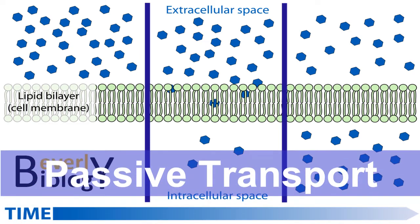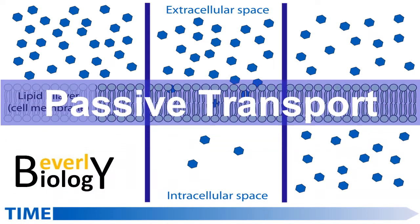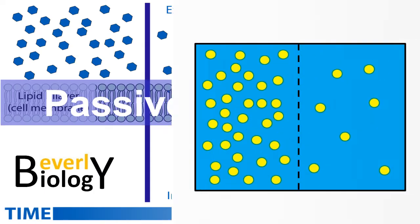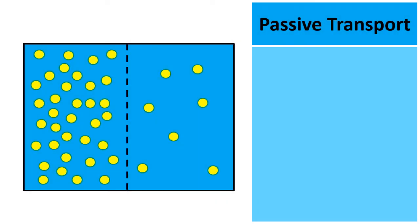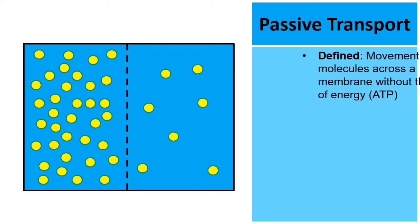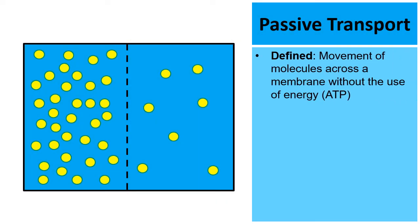The topic of today's video is passive transport. Passive transport is the movement of molecules across a membrane without the use of energy — energy in the form of ATP.